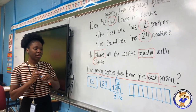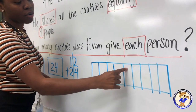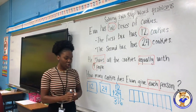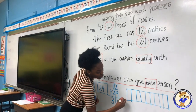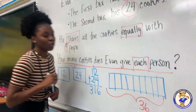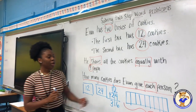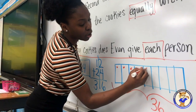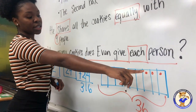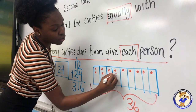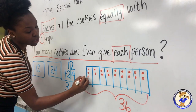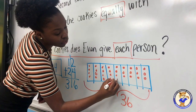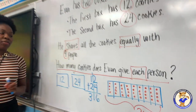Now we're going to go ahead and count our boxes to make sure we have the correct amount — nine. Good. How many cookies does Evan give to each person? We know we have a total of 36 cookies, so we're going to label our tape diagram 36 because we know that it has to equal 36. Next, we're going to put a cookie into each box until we get to 36, counting 1 through 36. Now we have 36 cookies.